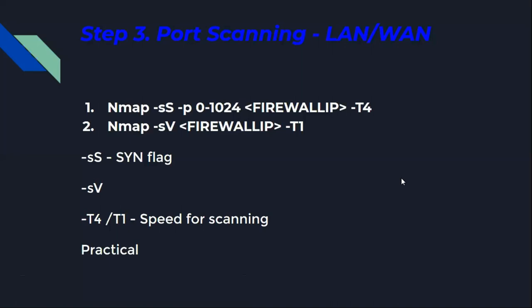After mapping necessary ports and identifying open ones, the penetration tester can run another Nmap scan to determine which services are running using: nmap -sV [firewall IP] -T1. This provides a basic overview of the firewall, open ports, and services running on those ports.